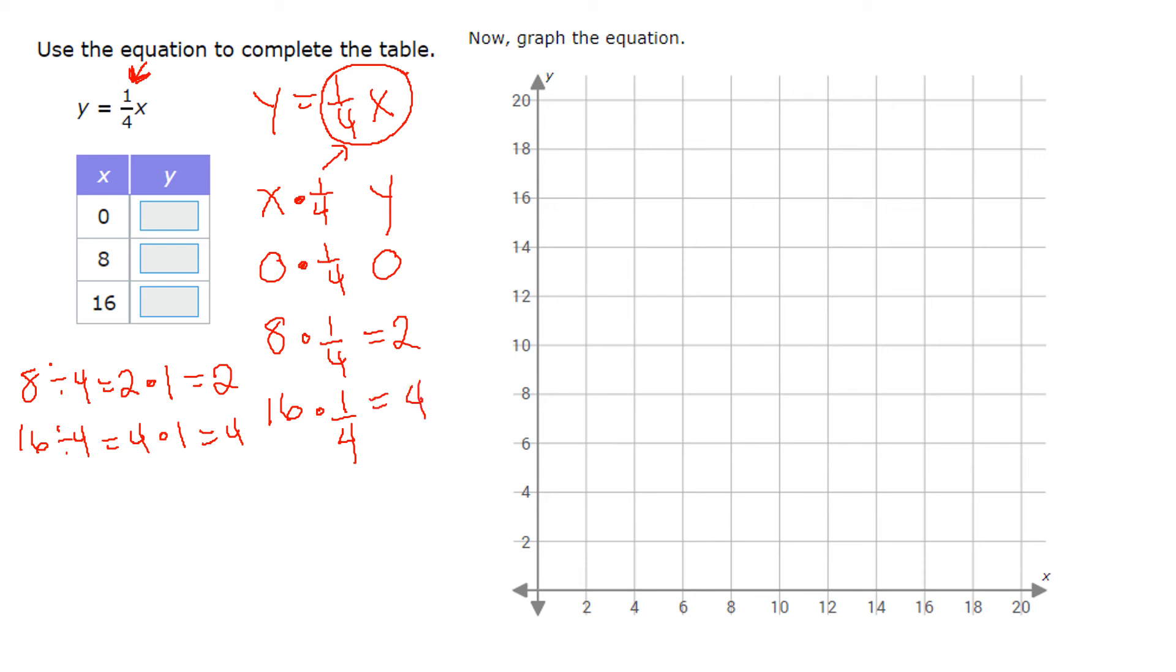So now we know that when x is 0, y is 0. When x is 8, y is 2. And when x is 16, y is 4. From there, all we have to do is plot the points, 0, 0, when x was 8. When x is 8, y is 2. And when x is 16, y is 4. So again, 0, 0, 8 in the x, 2 for y. 16 for x went with 4 for y.